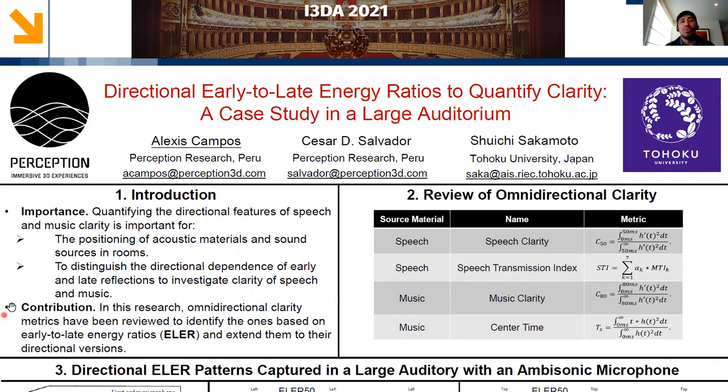In this research, our contribution is to review and to identify omnidirectional clarity metrics and extend them to their directional versions. As you can see in the title number two, we have remarked the best fitting omnidirectional metrics that might have potential for a directional version.